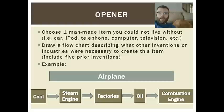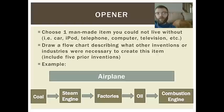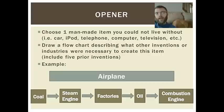So here's my example. I chose an airplane — I like to travel, so that's my one item I can't live without. If I start all the way at the end with the combustion engine — that's the kind of engine airplanes use — what does it take to get that engine? Well, you have to have oil, not only to make gas but for the parts to work. Then you've got factories, then you've got a steam engine, and then you go all the way back to coal. First you get coal that fires the steam engine, the steam engine creates factories, factories create technology for oil, and you use that oil to create the combustion engine, and finally you can get an airplane.